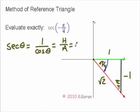So in this picture, the hypotenuse is square root of 2. The adjacent is 1. So the final answer is just going to be square root of 2.